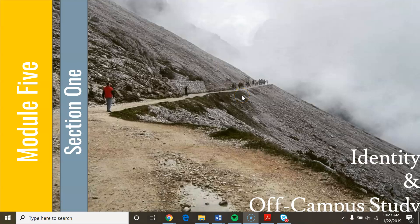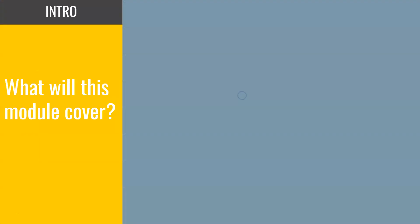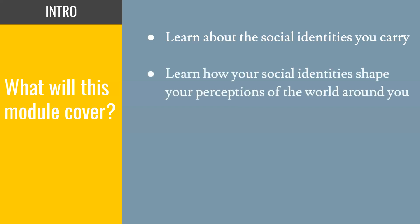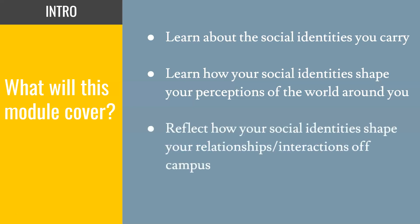Hello and welcome to Module 5, Section 1: Identity and Off-Campus Study. In this module, you will learn about the social identities you carry, learn about social identities and how they shape your perceptions of the world around you, and reflect on how your social identities shape your relationships and interactions off-campus.